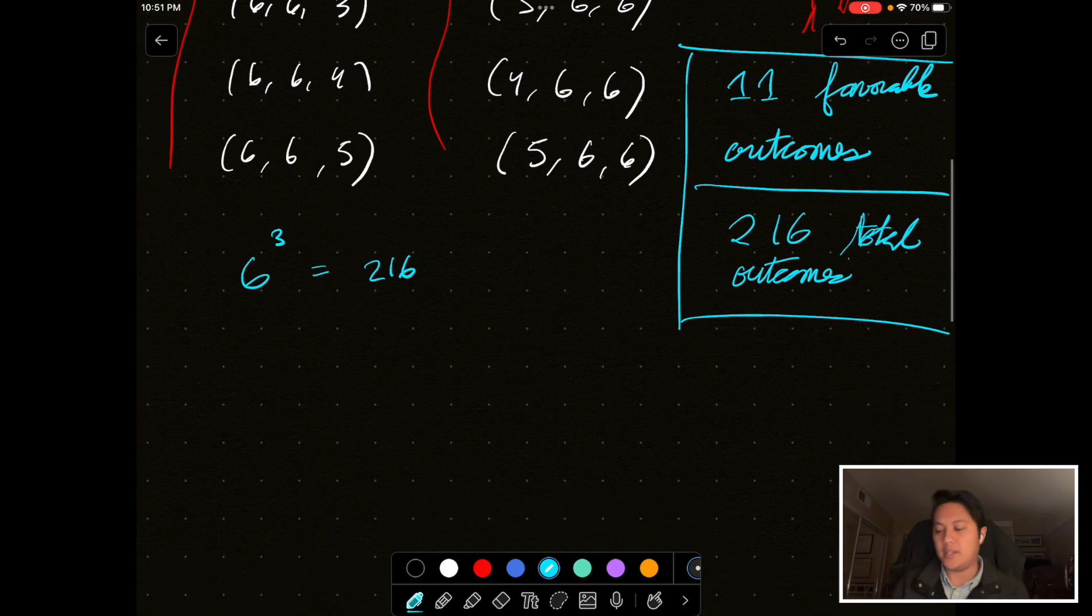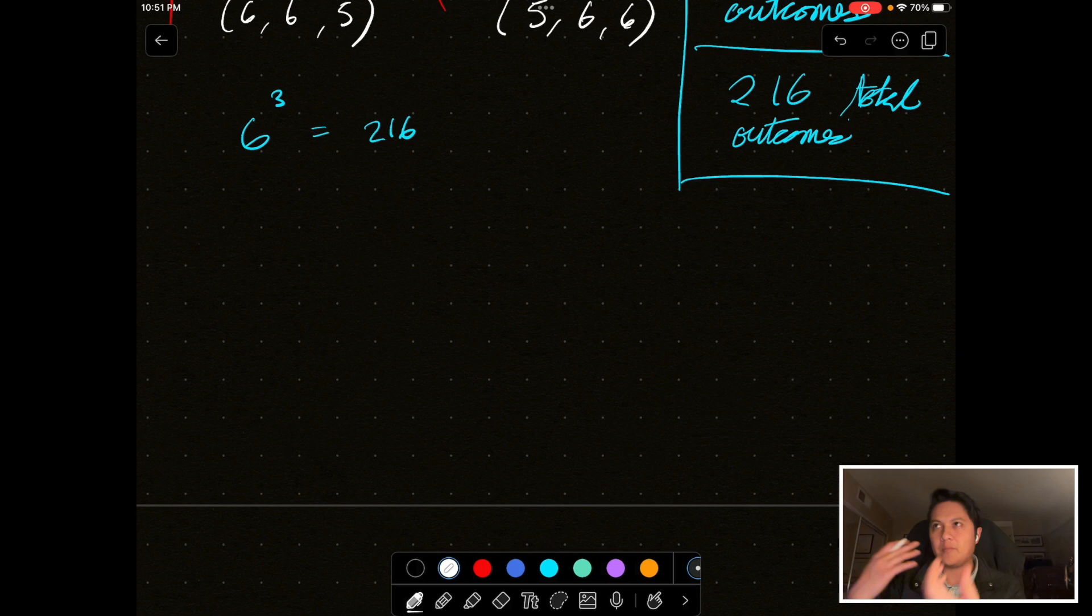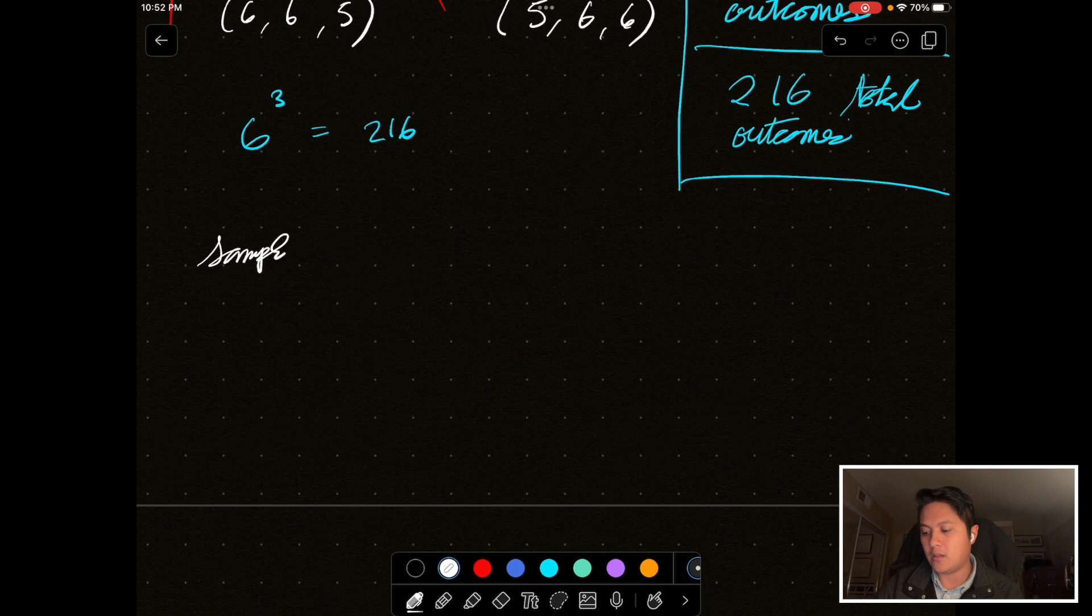And, one way to think about this is, if we take a very, maybe, axiomatic set theory kind of approach to probability, which is kind of the way I first learned, which is why I think I got really confused, is we talk about something called a sample space. Sample space. Sample space. Typically represented by this capital omega. And, the sample space is just sort of the space of all the possible outcomes, right?